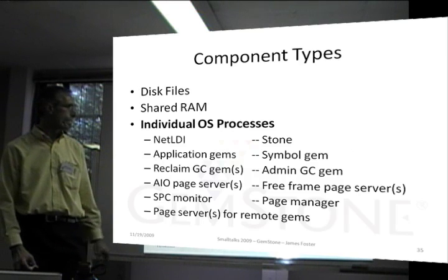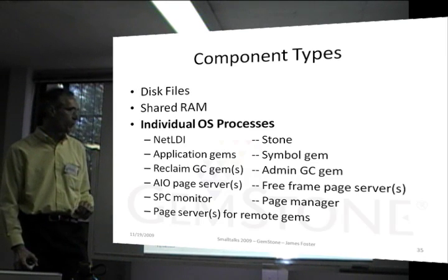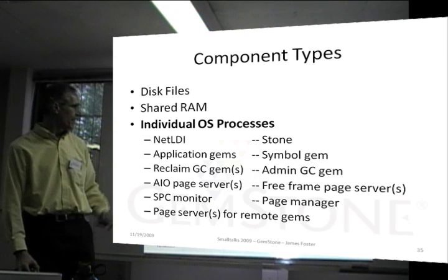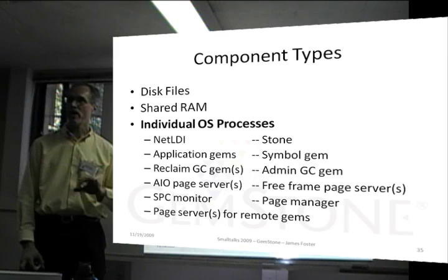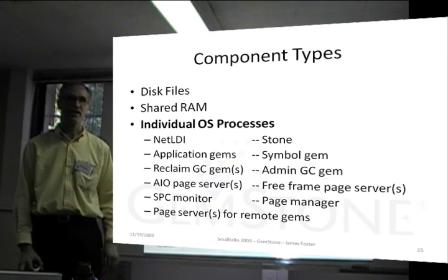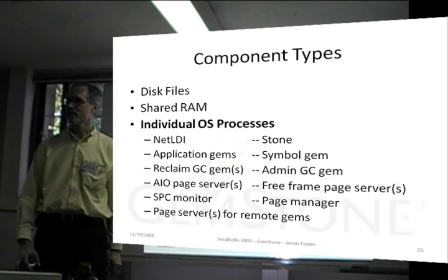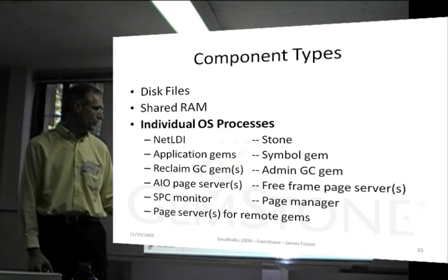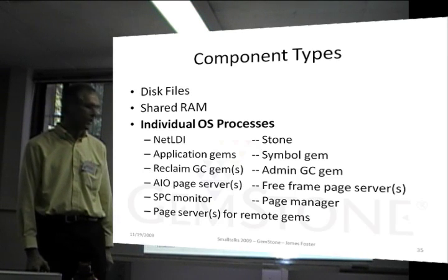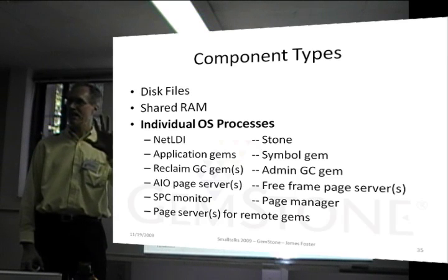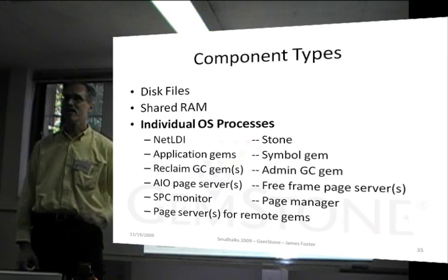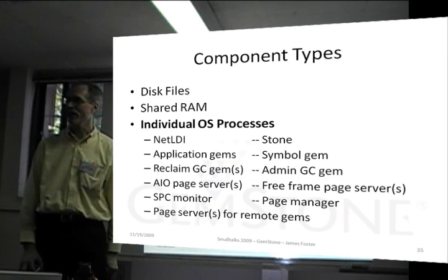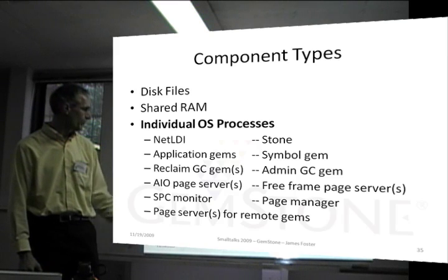Individual operating system processes — here's a list of them. We'll be going into some detail on some of them, but this is just to give you an idea of the complexity of the system. There's a process called NetLDI that provides and coordinates network communication between hosts. The application gems are the virtual machines that run your Smalltalk code. Reclaim garbage collection — get space — you can have multiple of those. AIO page servers: these processes look at the shared page cache for dirty pages and write them out to the extent, so that if space in the cache is needed, the pages will already have been written, but if someone needs them, they'll still be in memory. That's a performance optimization.